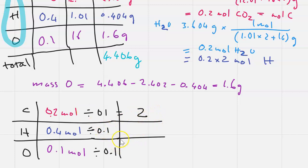Divide everything by 0.1, so that gives me for carbon is 2, hydrogen 4, oxygen 1. Sometimes you have questions that don't come out to be these nice and neat whole numbers, in which case you have to think about fractions.